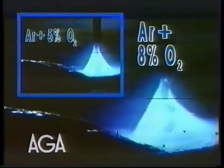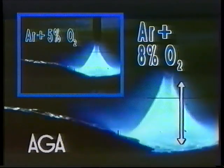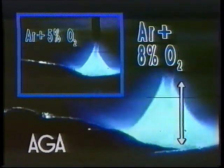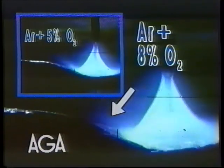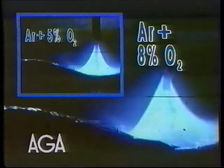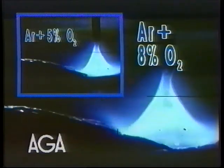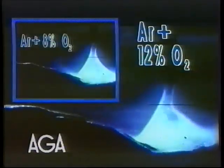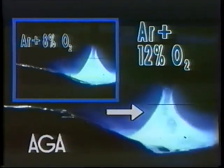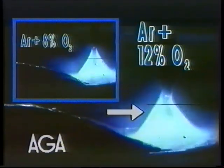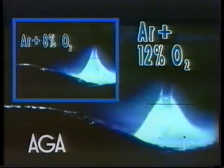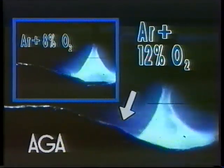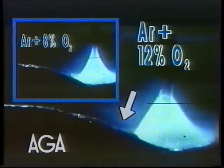The liquid column is about the same with 8% oxygen as with 5% oxygen in argon. The solidifying metal makes a steeper angle to the weld pool. Metal transfer with 12% oxygen in argon is about the same as with 5% and 8% oxygen. The angle of the solidifying metal to the weld pool is even steeper.